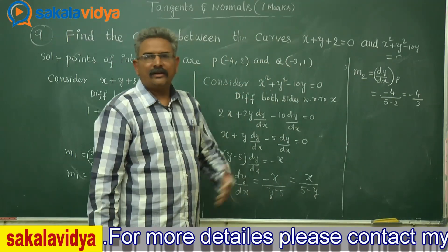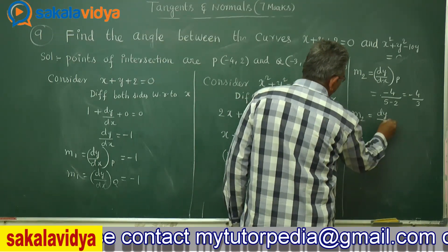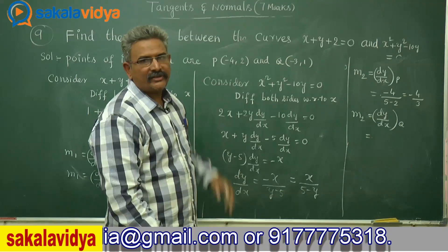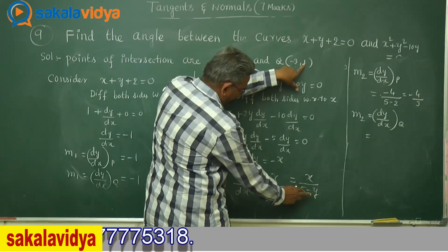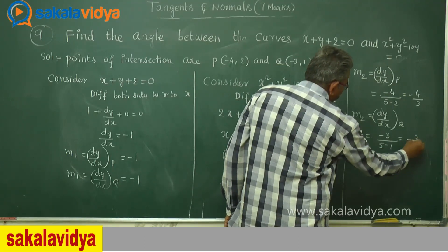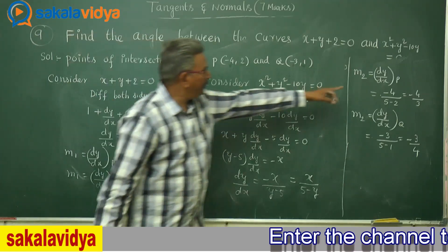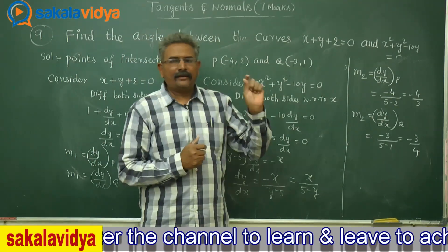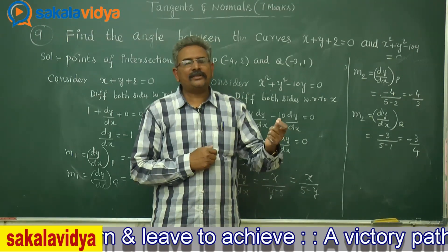So m2 at P has been evaluated as minus 4 by 3. Now let us find m2 at Q, which is the point minus 3 comma 1. Substituting x equals minus 3 and y equals 1: minus 3 by 5 minus 1, that is minus 3 by 4. So at P we know m1 equals minus 1, m2 equals minus 4 by 3. At Q we know m1 equals minus 1, m2 equals minus 3 by 4. Two cases will arise for finding the angle between the curves.